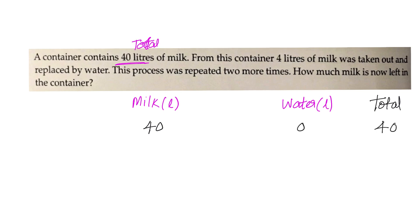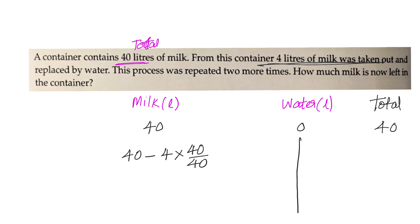Next, from this container 4 liters of milk was taken out. That means we have 40 minus 4 liters of milk — we can write it as 40 minus 4 into 40 by 40, because there is no water, so the ratio of milk is 100 percent, that is 40 by 40. So 40 minus 4 into 40 by 40 equals 36. We are only interested in milk, and the total will be 40 again.